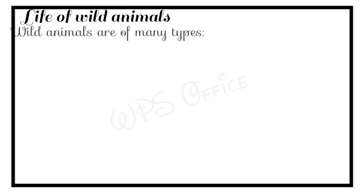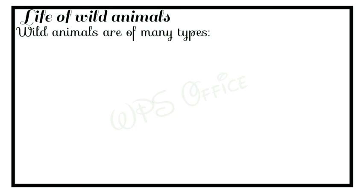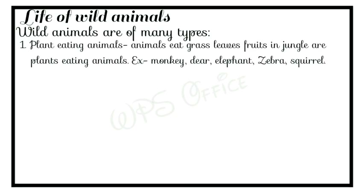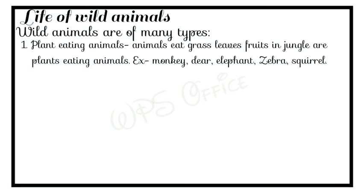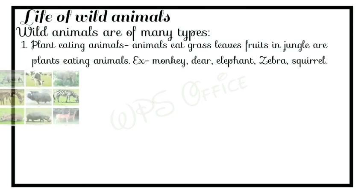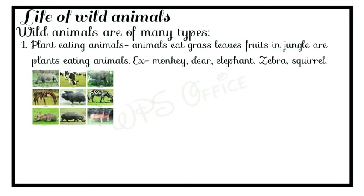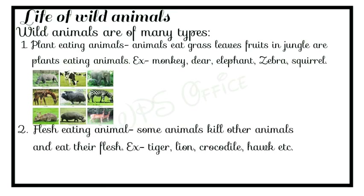The third topic is the life of wild animals. Let us start. Wild animals are of many types. First, plant-eating animals: some wild animals eat only plants. Animals that eat grass, leaves, and fruit in the jungle are called plant-eating animals. For example, monkey, deer, elephant, zebra, sheep, and cow — these all eat plants while living in the jungle.